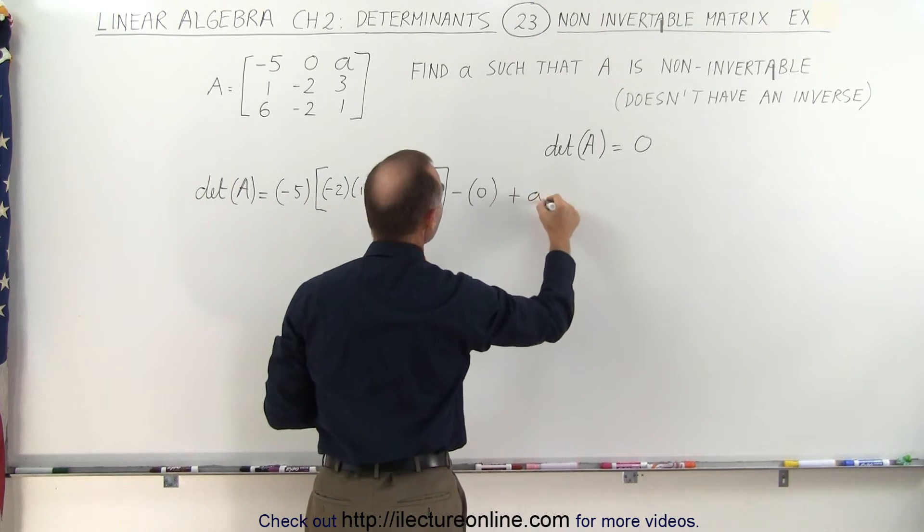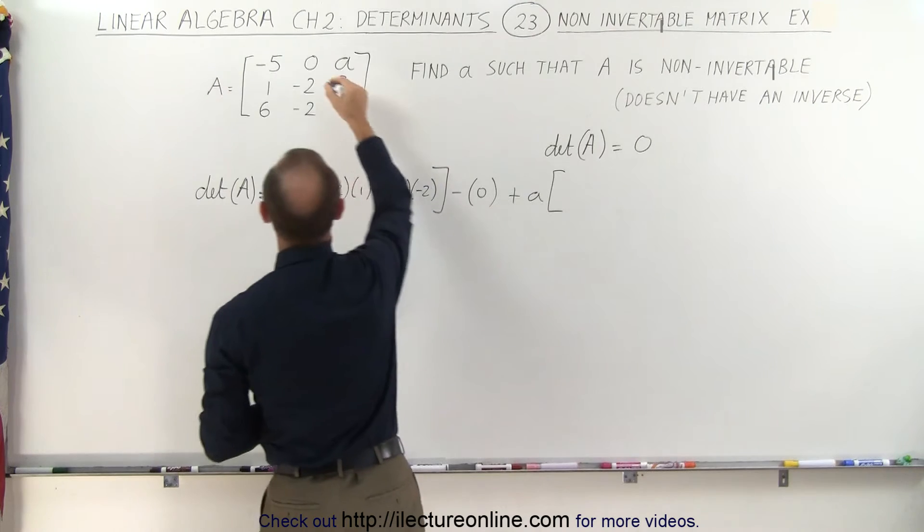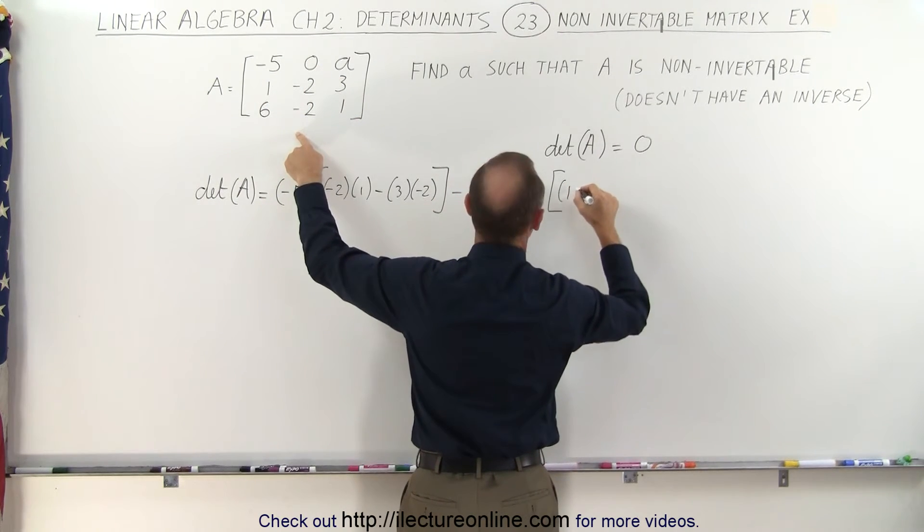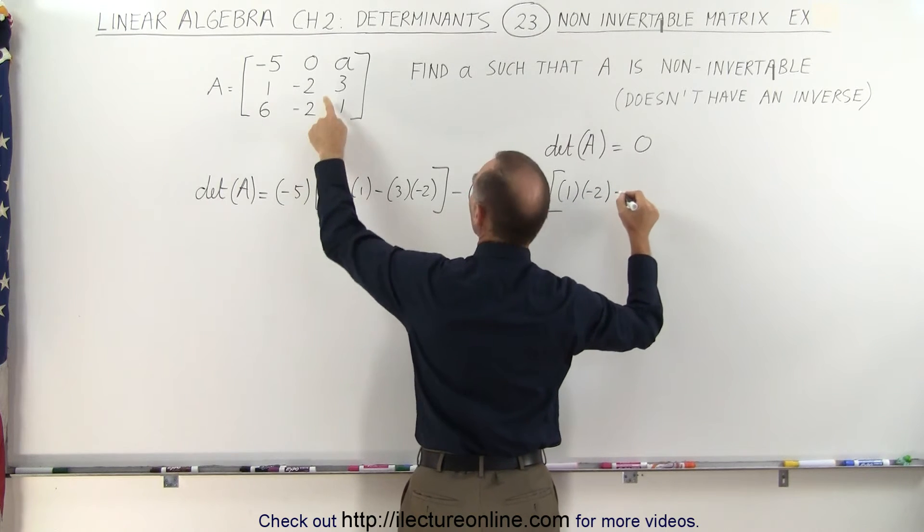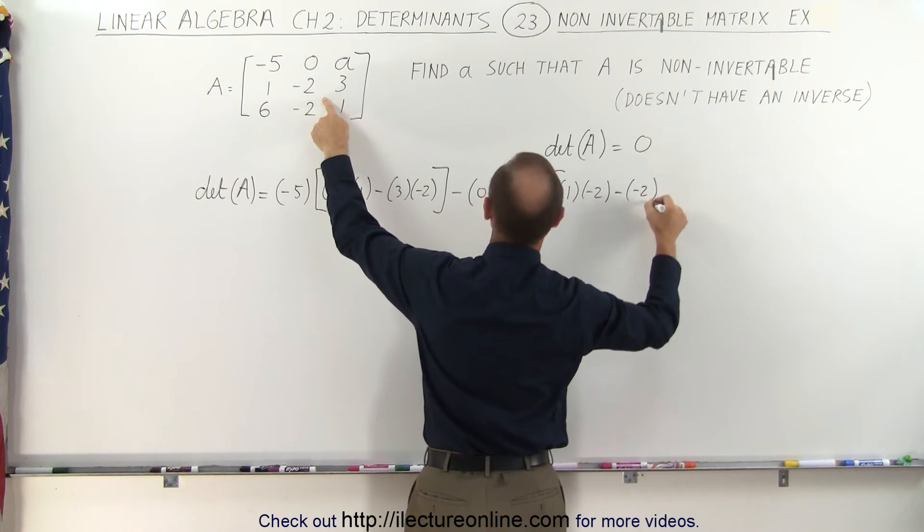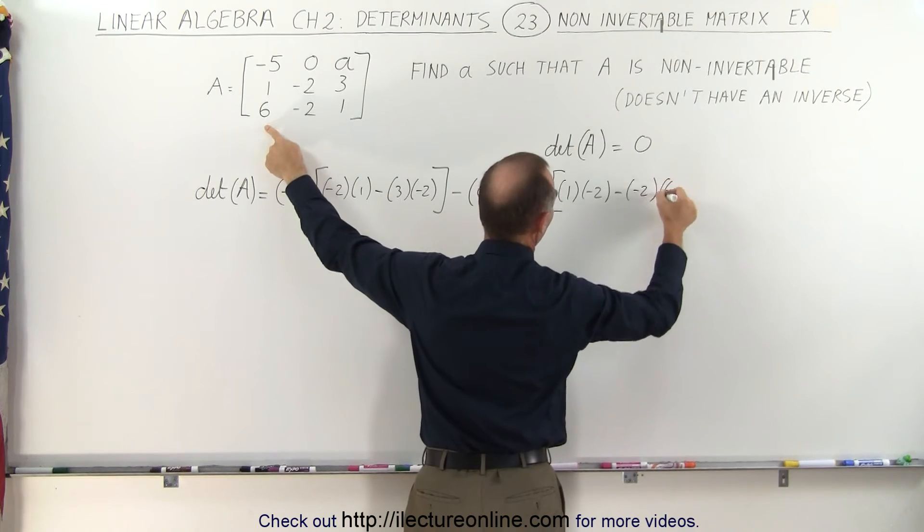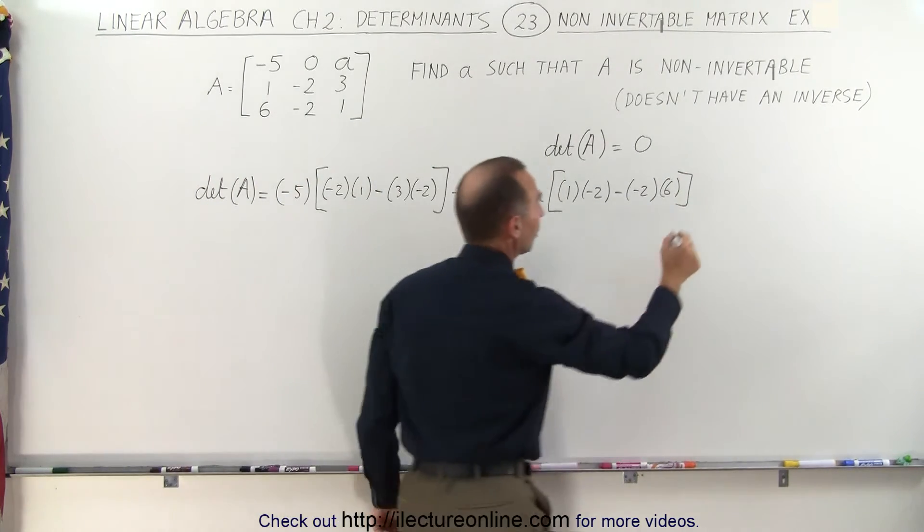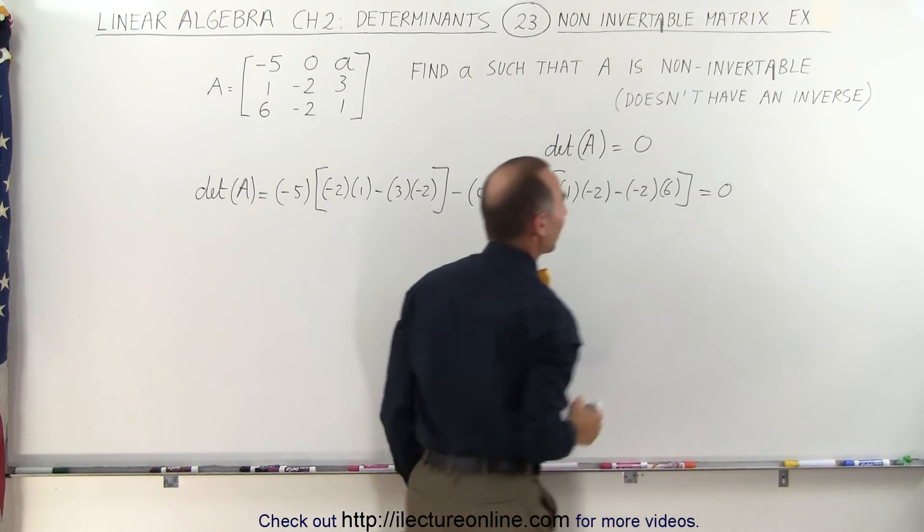And then we get plus A times, and then we take the determinant of these four elements, which is 1 multiplied times minus 2 minus minus 2 multiplied times 6. And of course that must equal zero if the matrix is not to have an inverse.